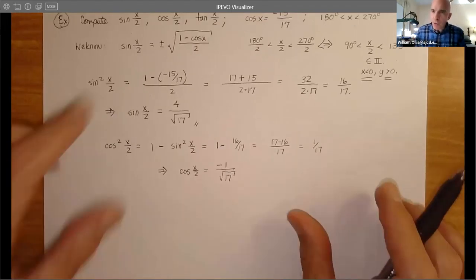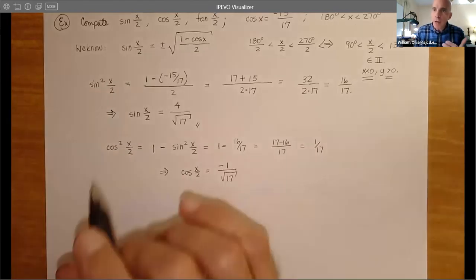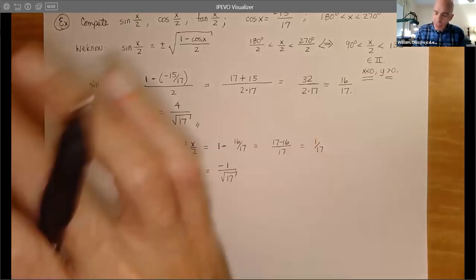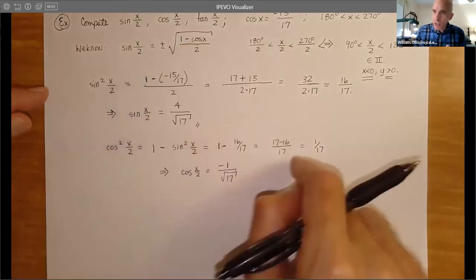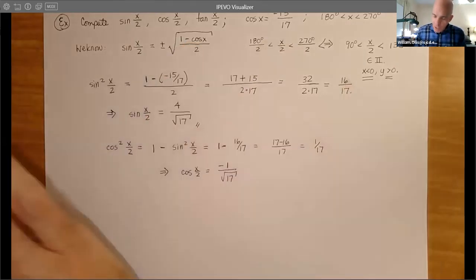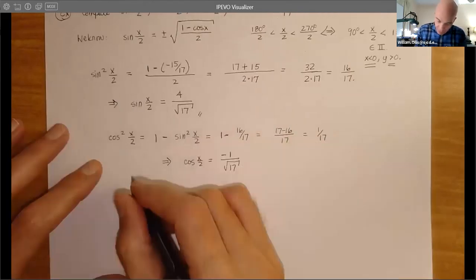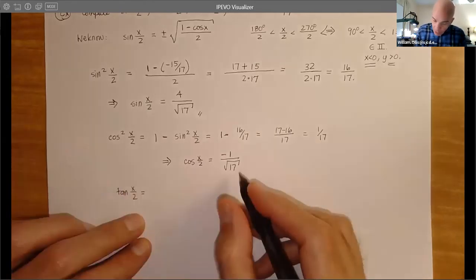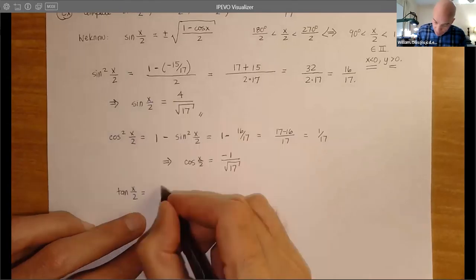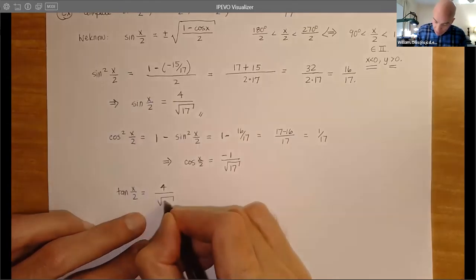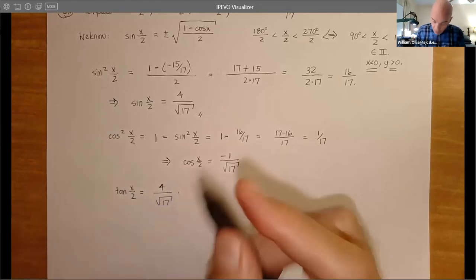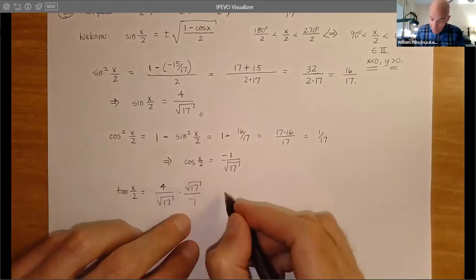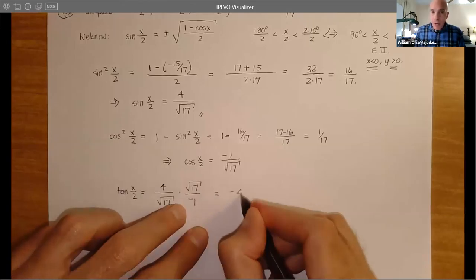So again, working with the squares makes the computation easier. And now tangent is just sine over cosine. You don't have to use the half-angle formula for tangent. What I'm trying to show you is: get the ball rolling with the half-angle formula and then use the simple relationships you already know from your previous work. So this will just be sine over cosine: sine is 4/√17, and cosine we just flip — that'll be -√17/1. The √17s cancel, so we just get -4.